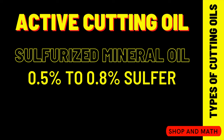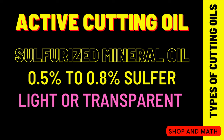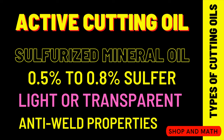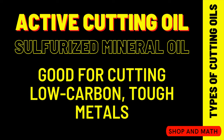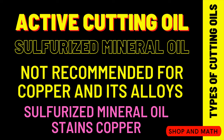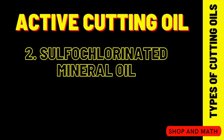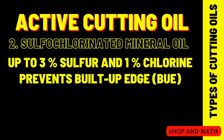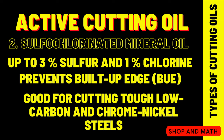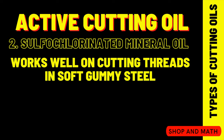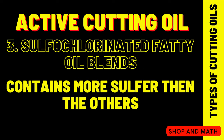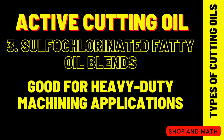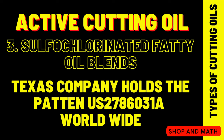Sulfurized mineral oil has 0.5 to 0.8% sulfur, is light or transparent in color, has really good anti-weld properties, and is good for cutting low carbon tough metals. It is not recommended for cutting copper and its alloys because sulfur stains copper. Sulfochlorinated mineral oil contains up to 3% sulfur and 1% chlorine, prevents built-up edge, and is good for cutting tough low carbon and nickel chromium steel. It works well for cutting threads in soft gummy steel. Sulfochlorinated fatty oil blends contain more sulfur and are good for heavy duty machining applications.